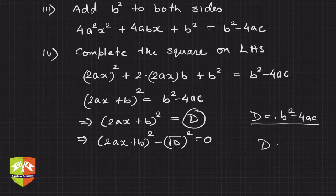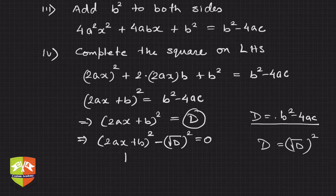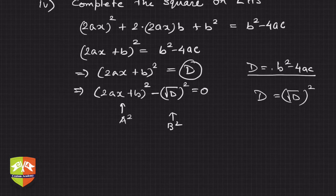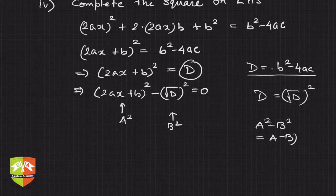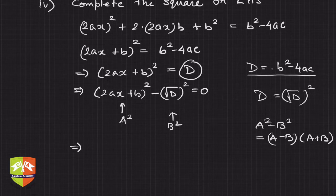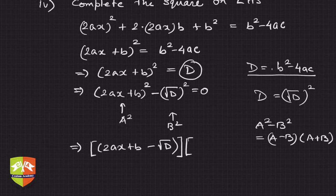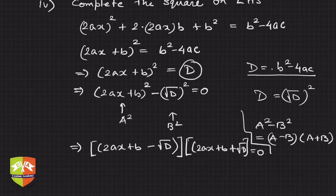This resembles a² minus b², so we use the difference of squares identity: a² − b² = (a − b)(a + b). Applying that here, we can write (2ax + b − √D)(2ax + b + √D) = 0.